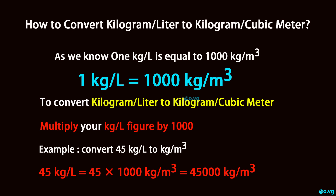To convert kilogram per litre to kilogram per cubic metre, multiply your kilogram per litre figure by 1000. Example: convert 45 kg per litre to kg per cubic metre. 45 kg per litre equals 45 times 1000, which equals 45,000 kg per cubic metre.